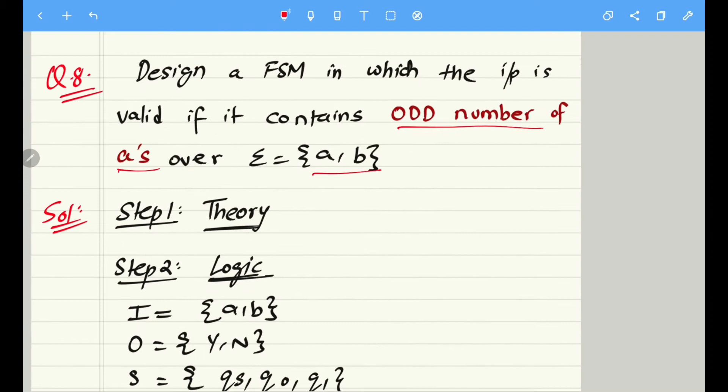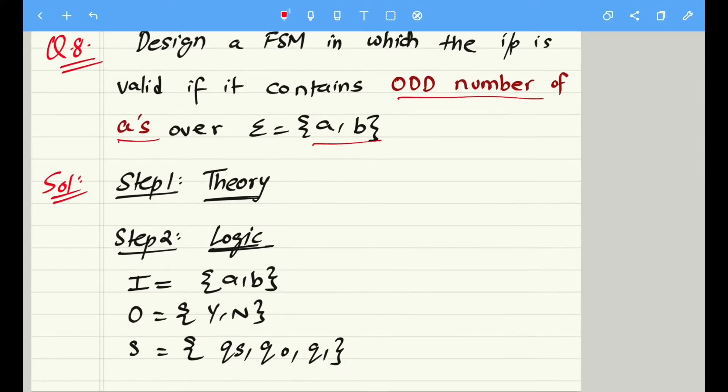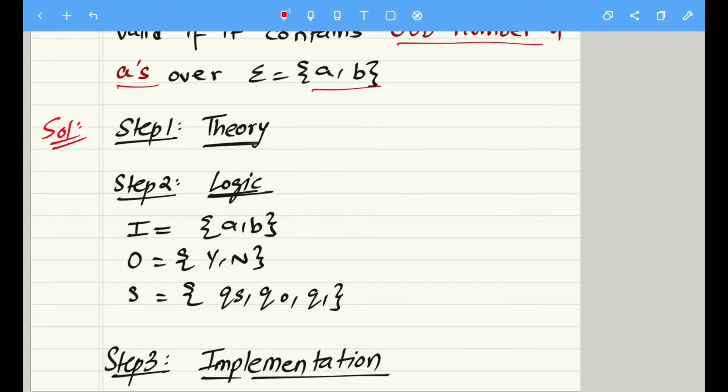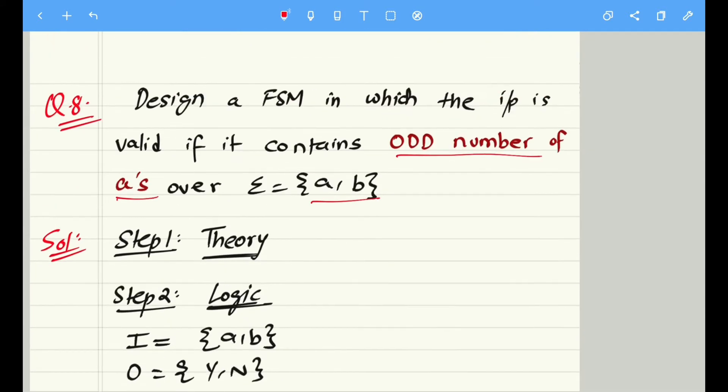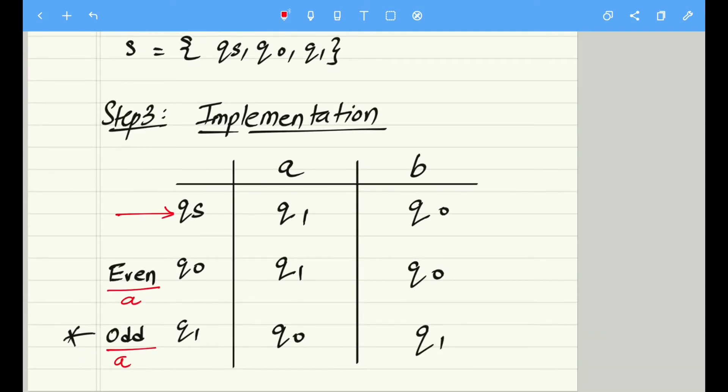According to the question, we are not bothered about the combination of a as well as b. We are only bothered about the presence of odd number of a's. So we have not made additional states for odd b's or even b's. That can be done later in the next problem, but in this case we are only considering the occurrence of odd number of a's. According to that, we have created these states. Odd number of a means q1 is my final state.